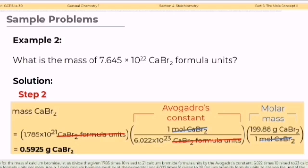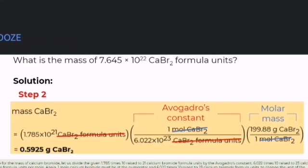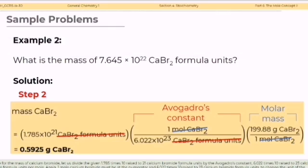We need to convert the mass of calcium bromide by multiplying the molar mass of 199.88 grams per mole. In this unit factor, one mole calcium bromide is at the denominator while 199.88 grams is at the numerator to cancel the unit moles of calcium bromide. By simplifying and doing the operation, we can obtain 0.5925 grams of calcium bromide.